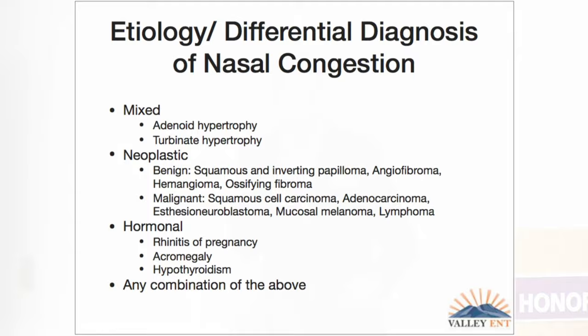Neoplastic conditions must also be considered. There are about 30 or 40 different types of tumors that can grow in the nose. This is an example of inverting papilloma — a benign tumor.